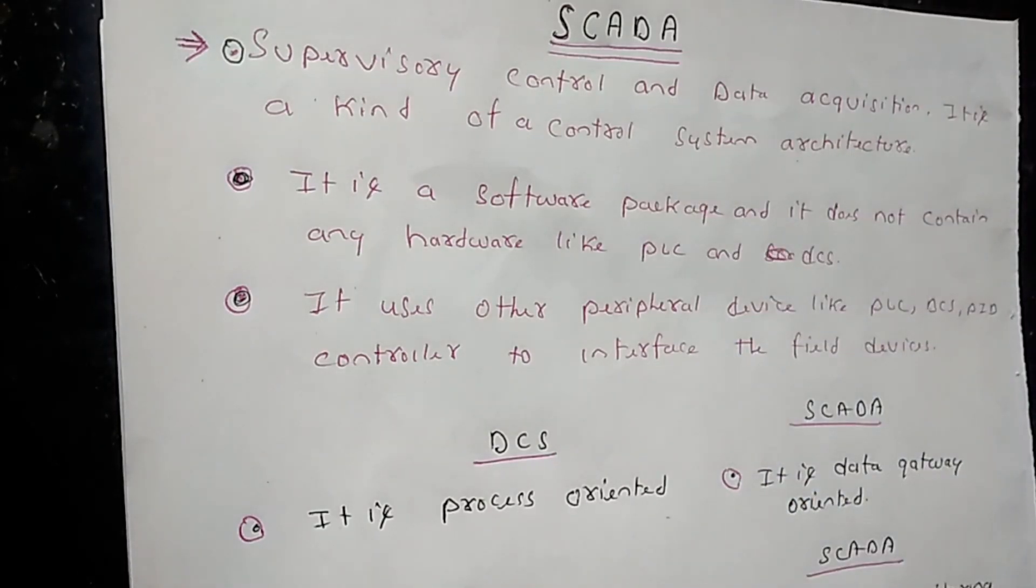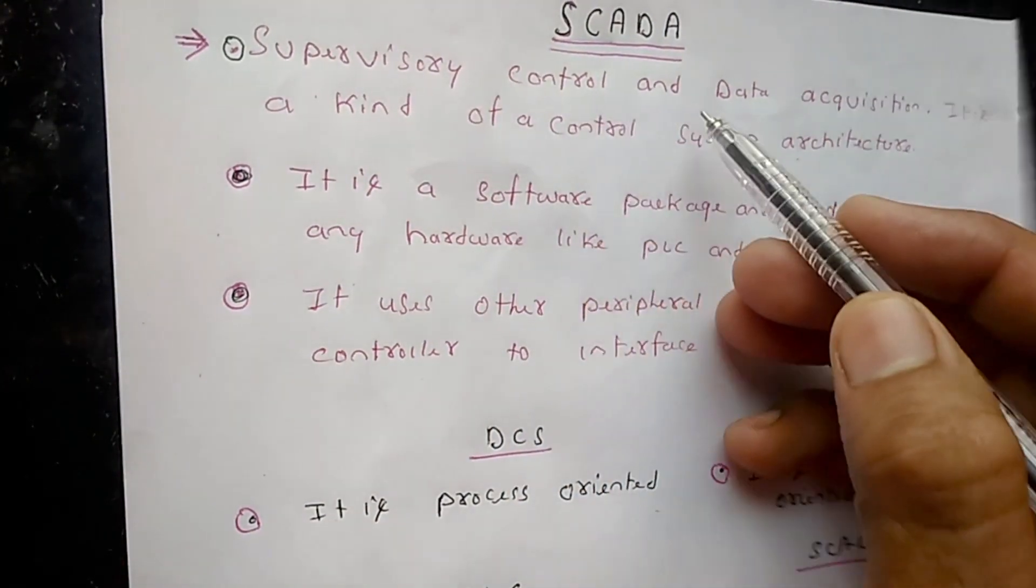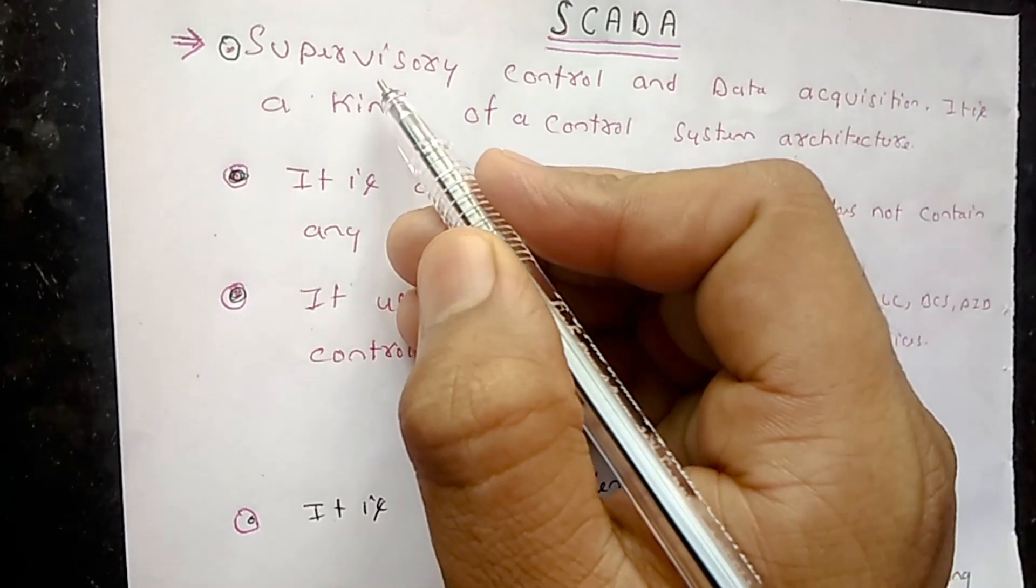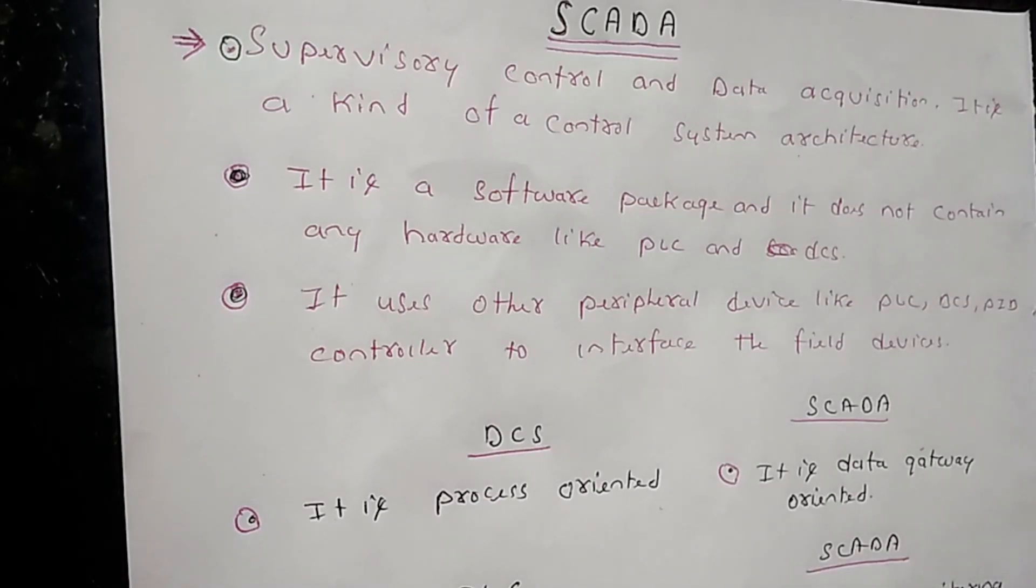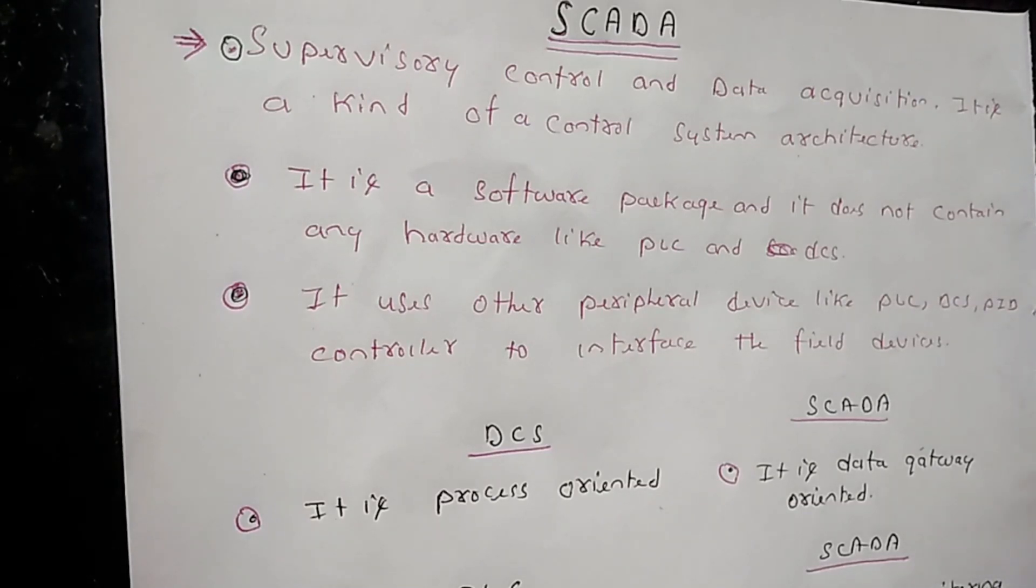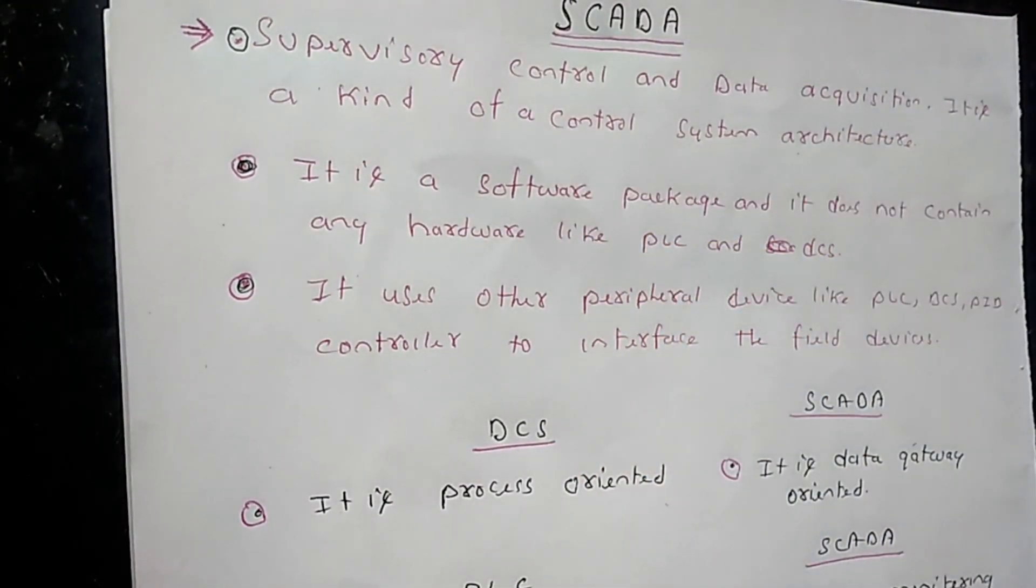What does SCADA stand for? SCADA stands for Supervisory Control And Data Acquisition. From the name itself, supervisory control, you can make out SCADA is just like a supervisor or a leader. It can get its work done via other controllers like PLC and DCS. It does not do its work itself. It is a kind of control system architecture.